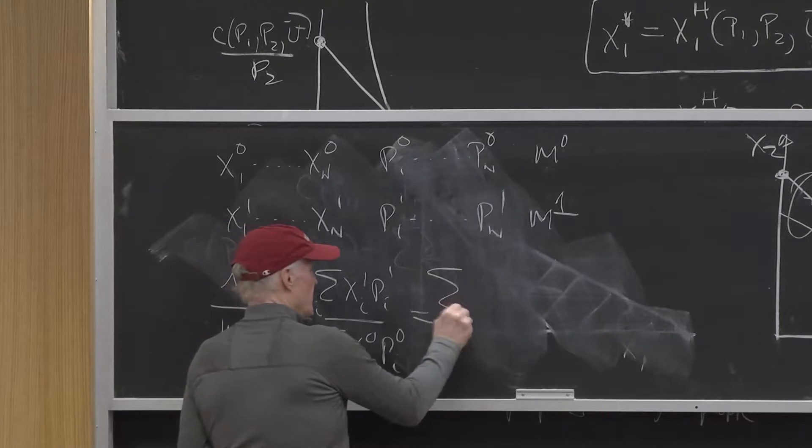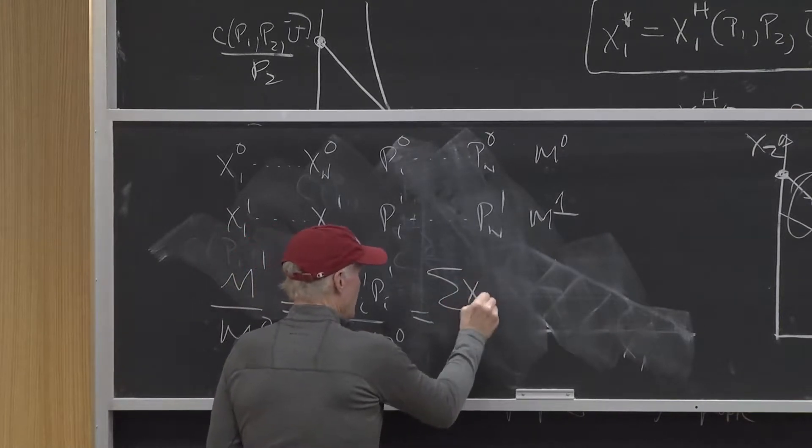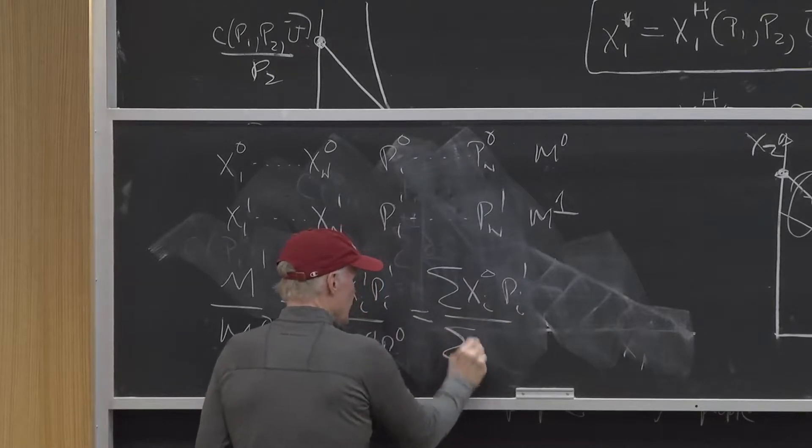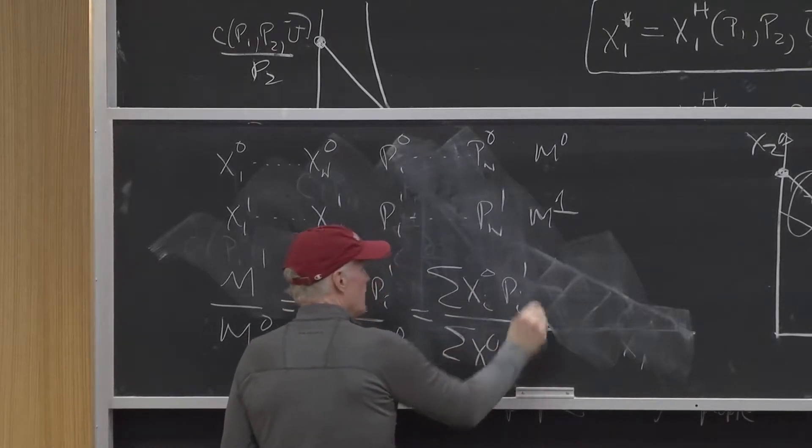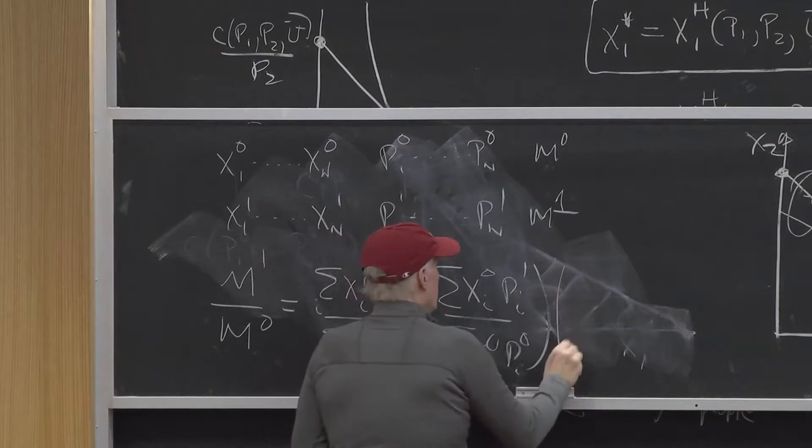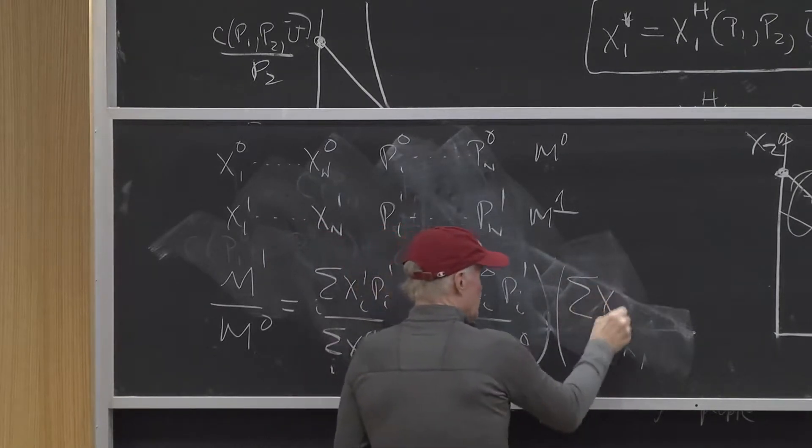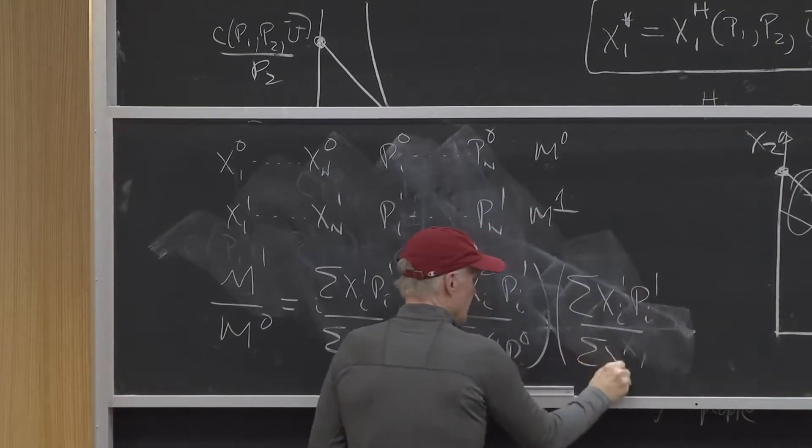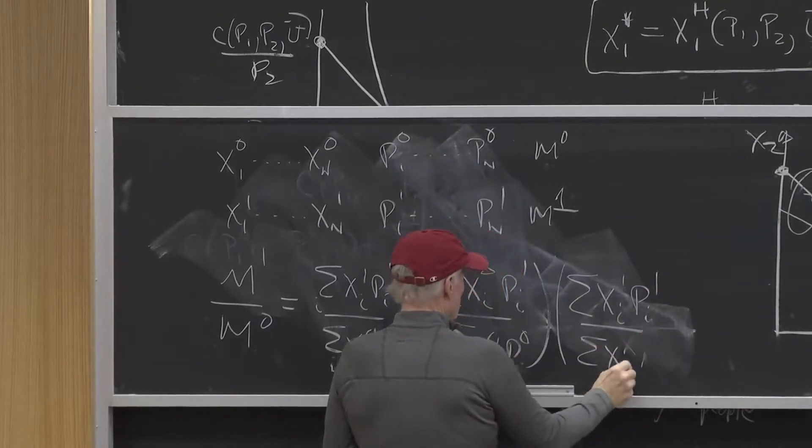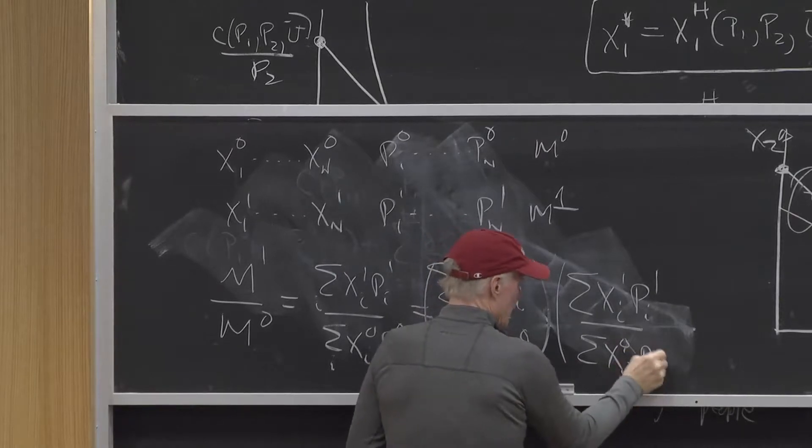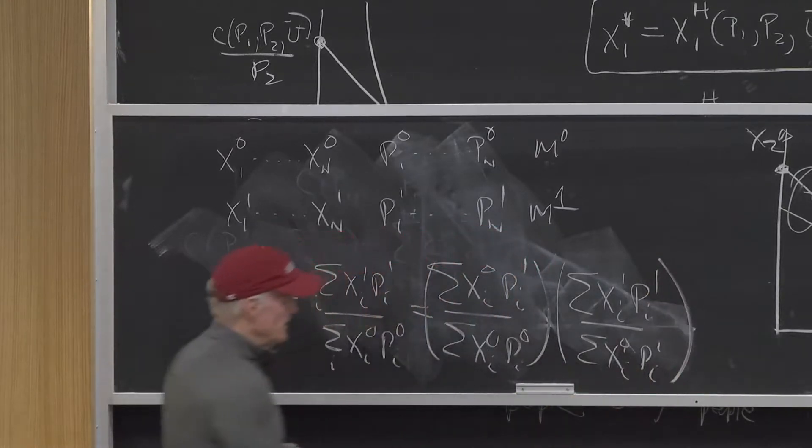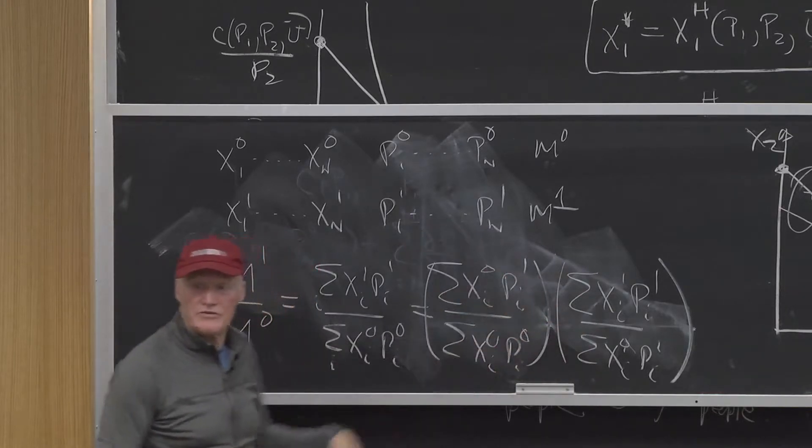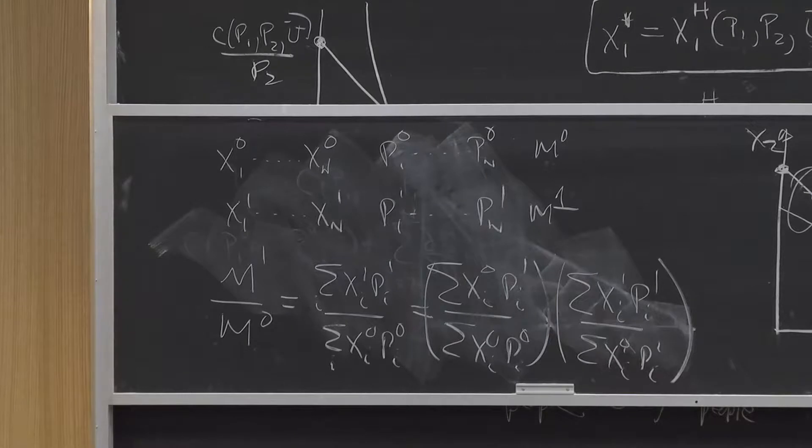We often do something like this. This is the sum of xi naught, p1, over the sum of xi naught, p1, times the sum of xi1, p1, over the sum of xi naught, p1. And you'll notice that works because I got the same thing here and here. I've just introduced that term in both places.